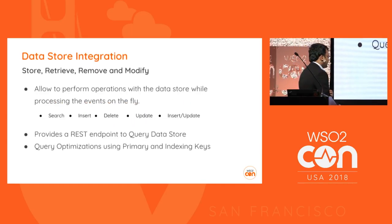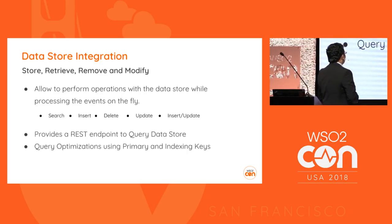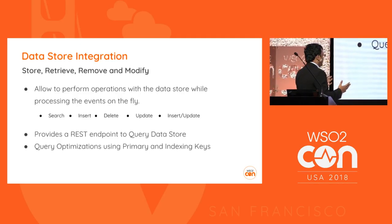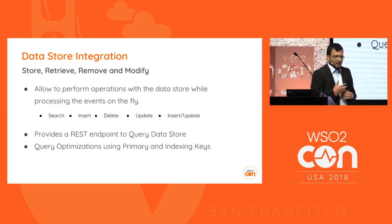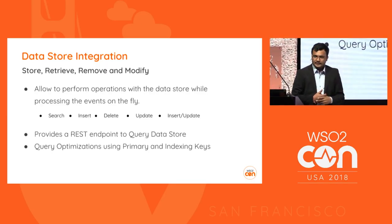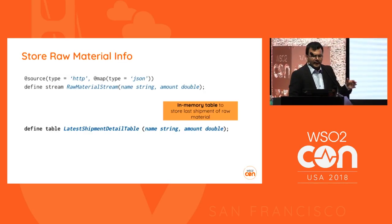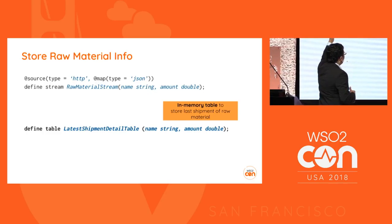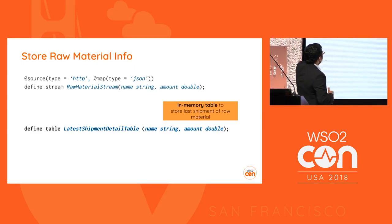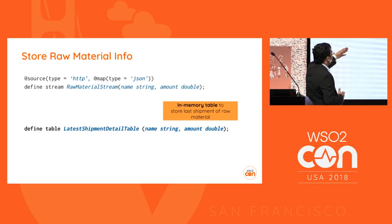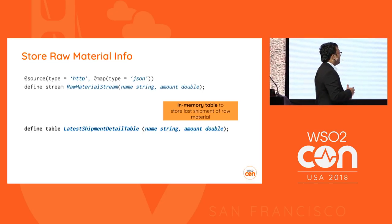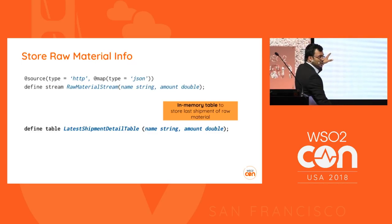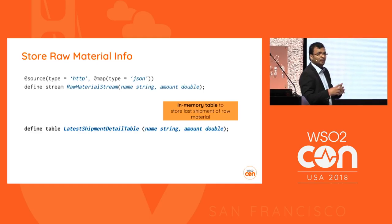For data store integration, it allows you to perform operations like search, insert, delete, update, and insert-or-update, with optimization using primary keys and index keys. We use a raw material stream and define a table called 'latest shipment table' with fields 'name' and 'amount.' Without any annotation, it's treated as an in-memory table.